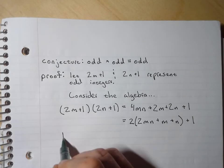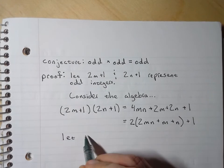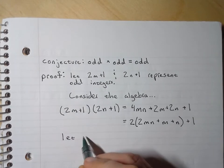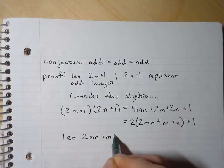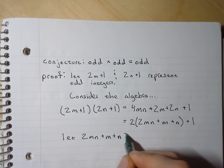So let's do let, and this is probably the trickiest part. Let 2mn plus m plus n equal q.